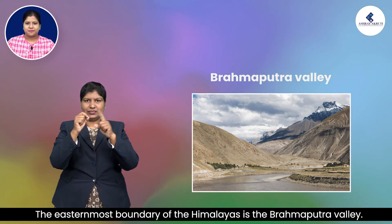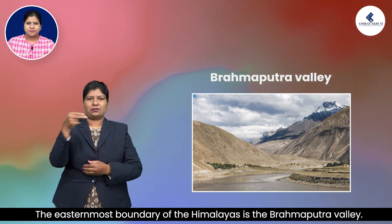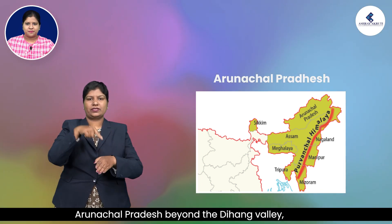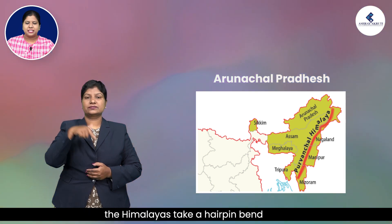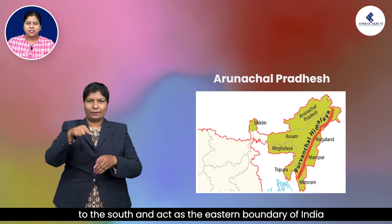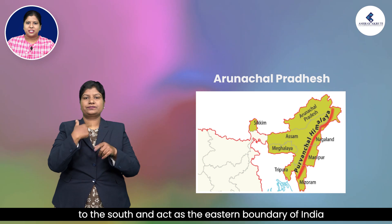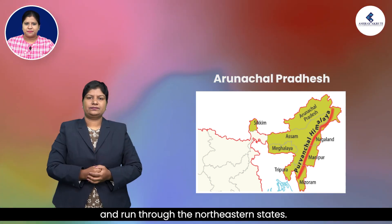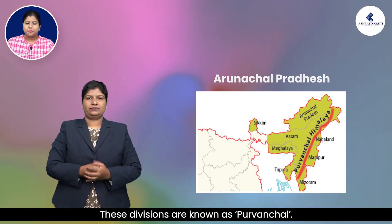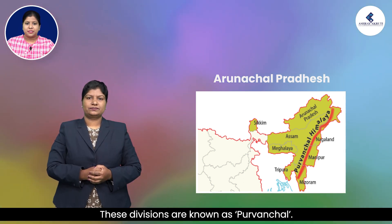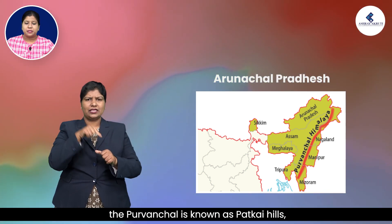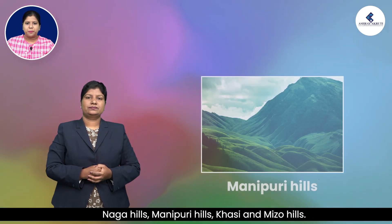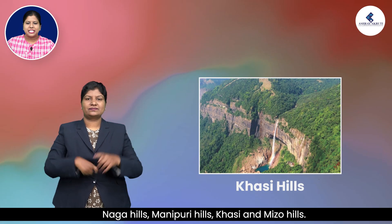The easternmost boundary of the Himalayas is the Brahmaputra valley. Beyond the Dihang valley, the Himalayas take a hairpin bend to the south and act as the eastern boundary of India, running through the northeastern states. These divisions are known as Purvanchal, also called Patkai hills, Naga hills, Manipuri hills, and Khasi and Mizo hills.